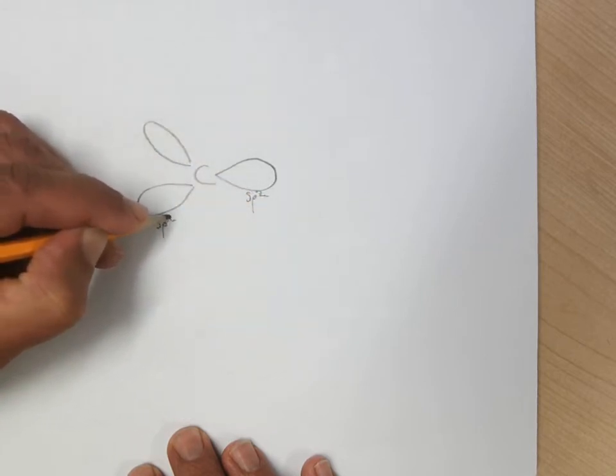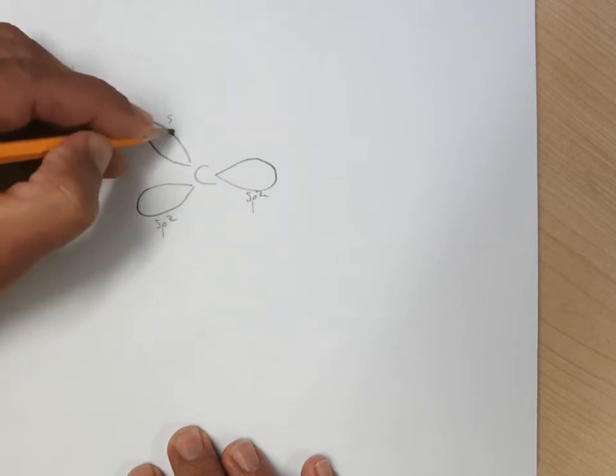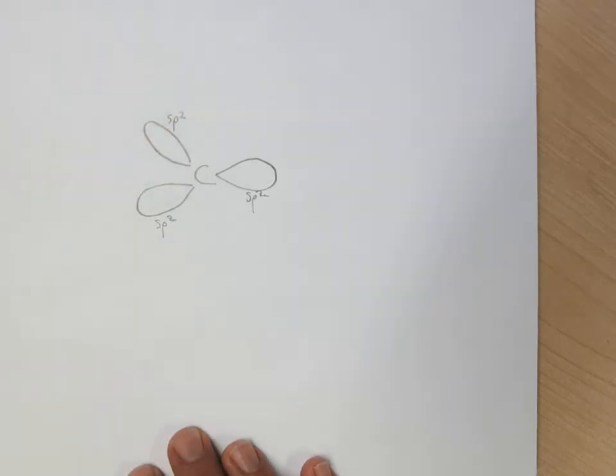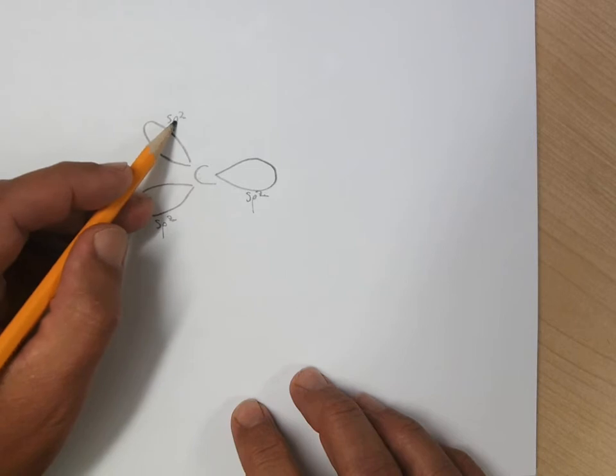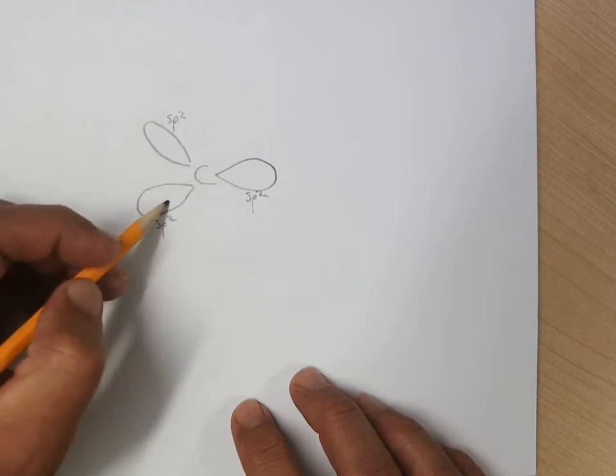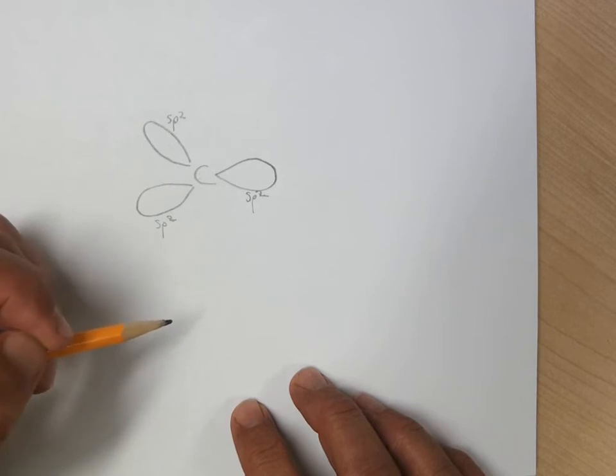And that's one of the reasons that this will hybridize is so that it'll have the orbitals that are the right orientation to form the bonds that we need for the molecule. So the carbon uses the s and two of the p orbitals to form the three SP2 hybrids, which form a trigonal planar structure.